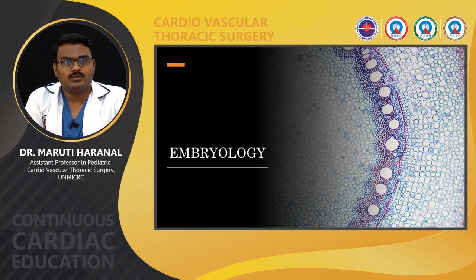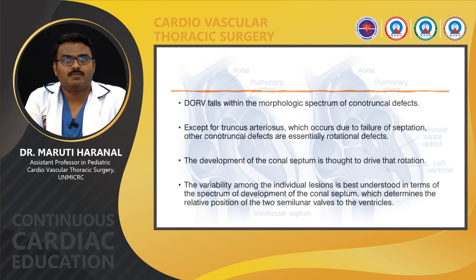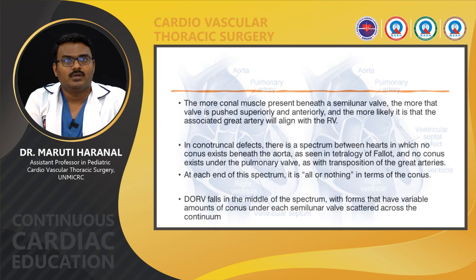DORV falls within the morphological spectrum of conotruncal defects. Except for truncus arteriosus, which occurs due to failure of septation, other conotruncal defects are essentially rotational defects. The development of the conal septum is thought to drive that rotation. The variability among individual lesions is best understood in terms of the spectrum of development of the conal septum, which determines the relative position of the two semilunar valves to the ventricles. The more conal muscle present beneath a semilunar valve, the more that valve is pushed superiorly and anteriorly, and the more likely the associated great artery will align with the right ventricle.